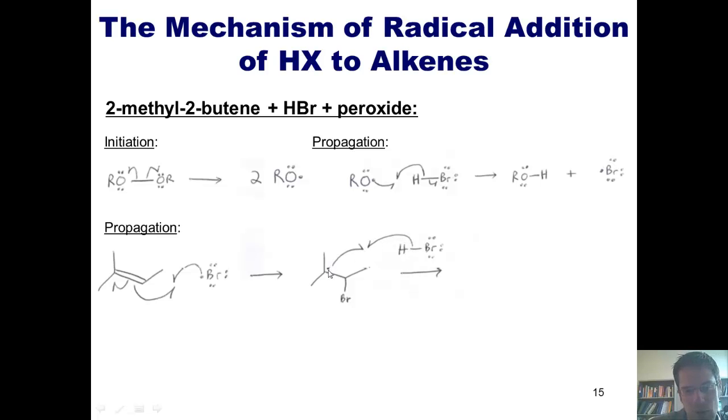and then combining that electron with the single electron on this carbon to form a bond at this position. In the process, this bromine is going to walk away with the second electron in this HBr bond, ultimately giving rise to this product and a second molecule of bromine radical.